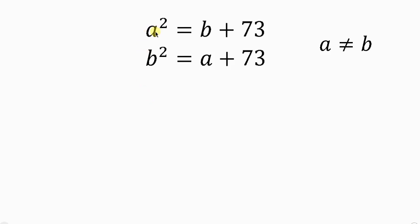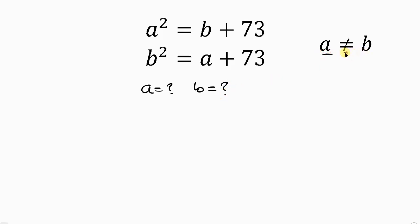The question is: a squared is equal to b plus 73, and b squared is equal to a plus 73. We are required to look for the value of a and the value of b, but take note that a is not equal to b.